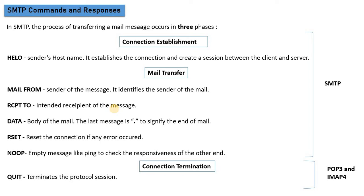The second part is mail transfer. The commands available here include: MAIL FROM, which specifies where the mail is coming from — who the sender is. RCPT TO, which specifies who the recipient is. And DATA, which defines the body of the mail. The last message signifies where the mail body ends.